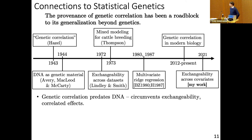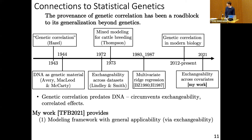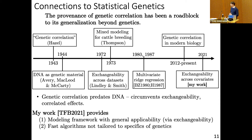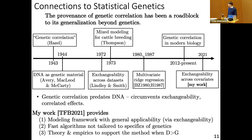So our work, introduced just last year against this backdrop, provides a few different contributions. A first contribution is a general modeling framework with broader applicability beyond genetics, justified through this idea of exchangeability of effects across covariates. We provide fast algorithms not tailored to some of the specifics of genetics, considering also cases where we have a lot of correlation structure in our noise across the data sets. And third, we provide theory and empirics that provide support for our method in this setting where the number of covariates is greater than the number of data sets.